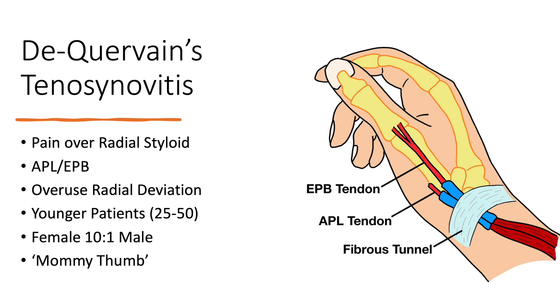Occasionally it's a single strenuous activity, but much more commonly it's repetitive activity over many weeks and months. The repetitive activity involved is not so much thumb movement as you might think, but wrist movement — repetitive ulnar and radial deviation, and particularly radial deviation under load, like picking something up and lifting it repetitively. One of the most common groups we see with this are young mums picking up their newborns — so much so that in the States it's called 'mommy thumb'.